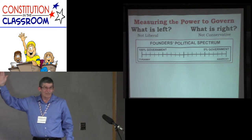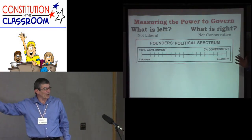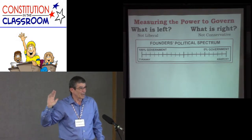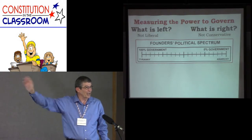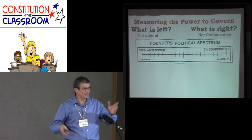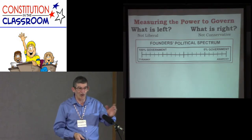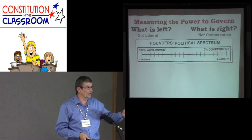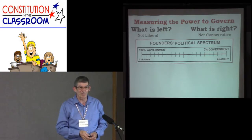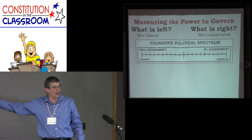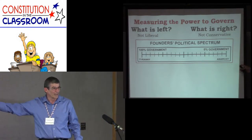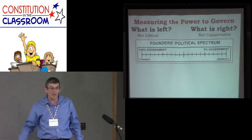Everything in the world can be measured, and this is how the founders chose to measure government. Kings on the far side — when everything is one man or a very small group making all the rules, divvying out all enforcement, treating the people as they wanted, and giving them micro pieces of freedom along the way — all the way down to when there is no government, which is anarchy.